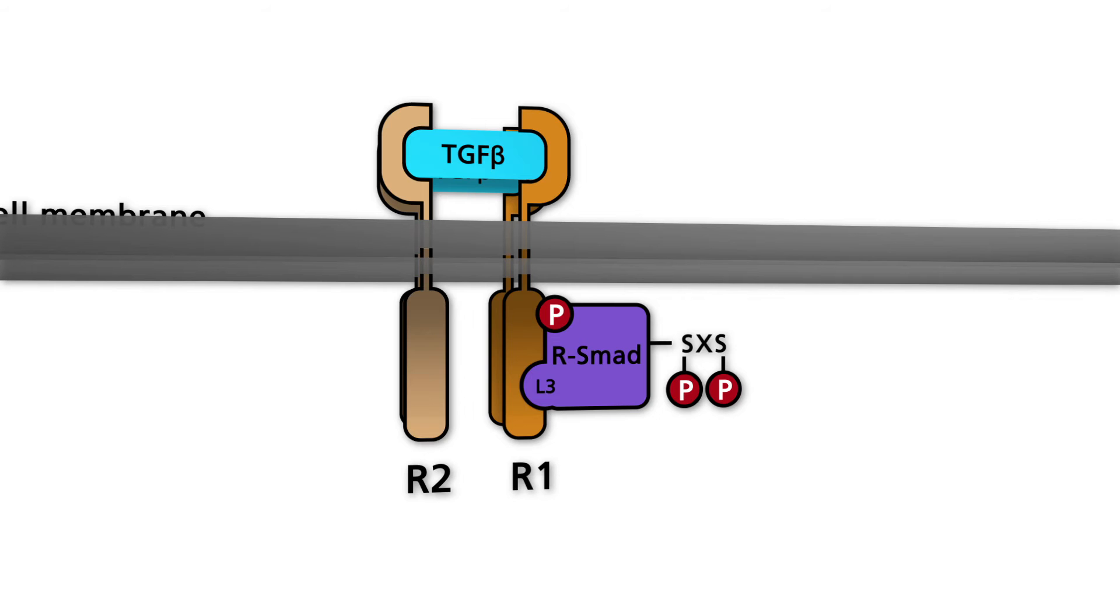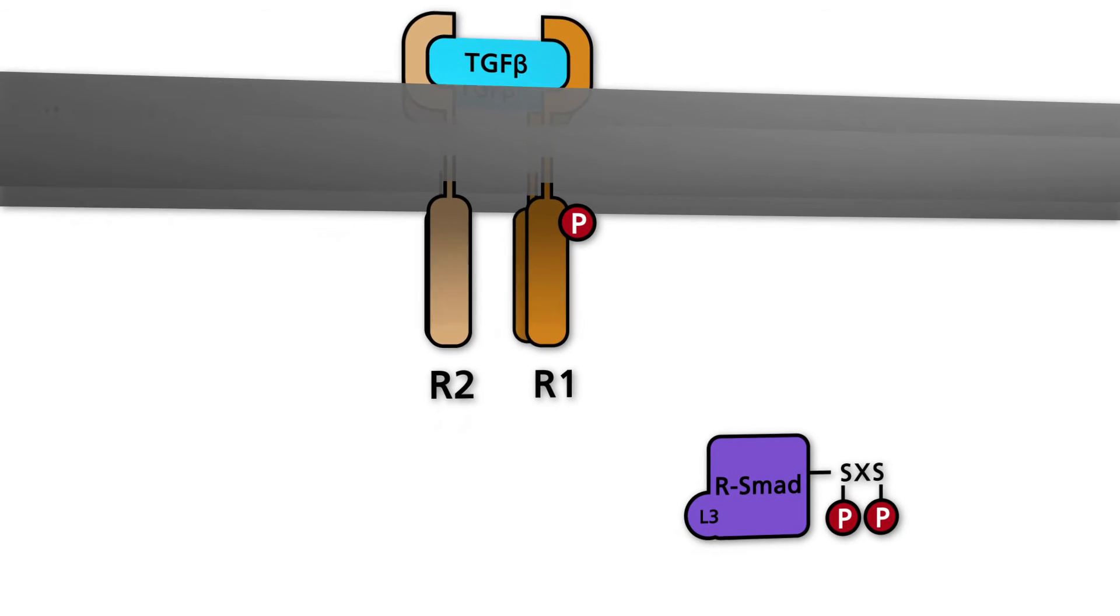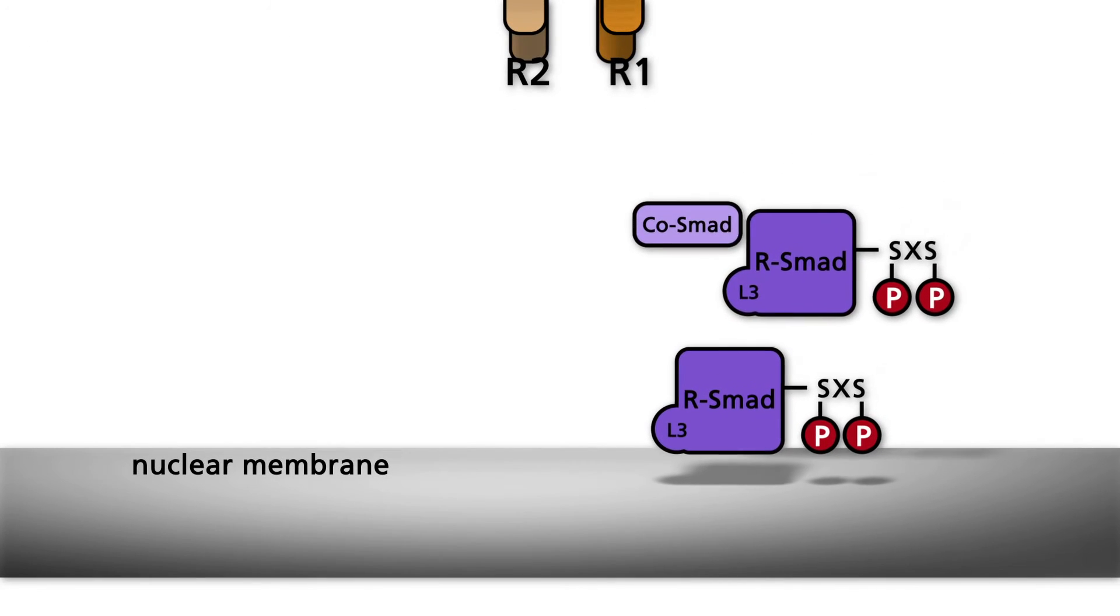Subsequently, the R-SMAD is released from the receptor. After release from the receptor, two R-SMADs form a trimeric complex with a common SMAD, SMAD4 in vertebrates.